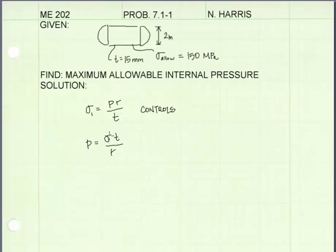And for sigma, I'll replace sigma1 with our allowable stress, which is 150 megapascals. T is the thickness of the tank, which is given as 15 millimeters. R is the internal radius, which will be half the diameter, which is 1 meter.